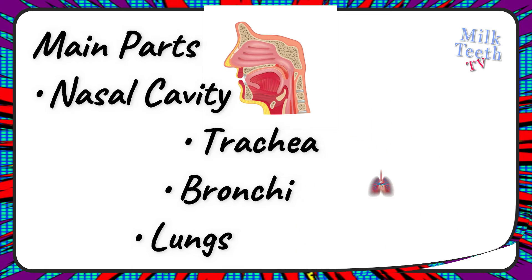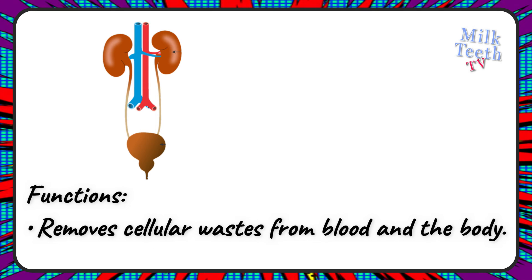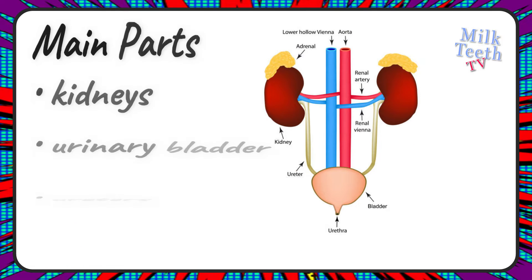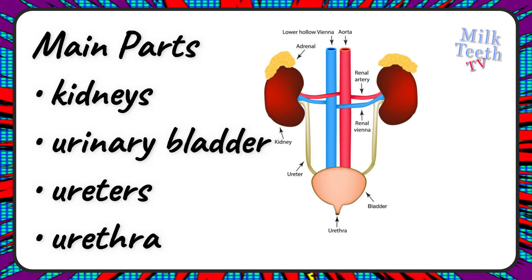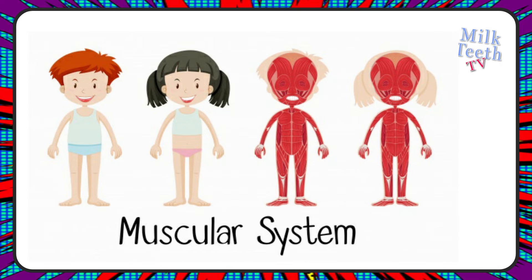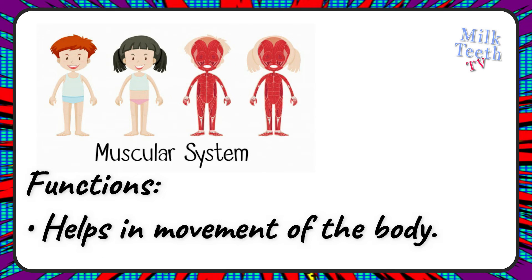The excretory system. Functions of the excretory system: removes cellular waste from blood and the body. Main parts of the excretory system: the kidneys, urinary bladder, ureters, and urethra.